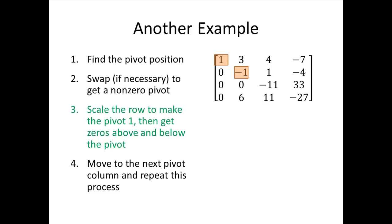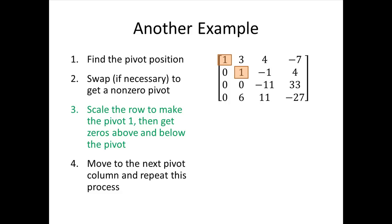After swapping rows two and three, we scale that row — multiplying by negative one to turn the pivot from negative one into one. Now we need zeros above and below. We multiply row two by negative three and add it to row one. Notice this doesn't affect the pivot in row one — it's still one in the first position. We also multiply row two by negative six and add it to row four. Column two is now set — we have our pivot and zeros above and below.